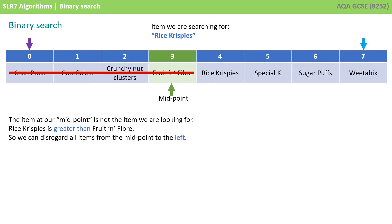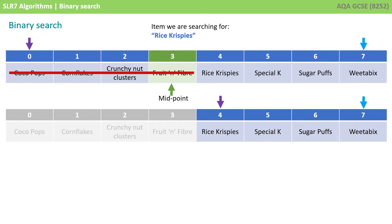So we're now going to check the item at index 3 to see if it's the one we're looking for. Let's assume we're looking for Rice Krispies. Well, Fruit and Fibre is not Rice Krispies — it's greater. So we can disregard all items to the left; we know it can't be one of those. The left pointer now becomes the midpoint plus 1. We can now repeat the algorithm.